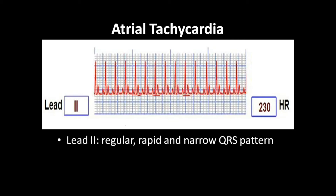The waves will be regular, rapid, and a narrow QRS pattern is seen. It looks like all the needles are kept upright. This is a typical feature of atrial tachycardia.